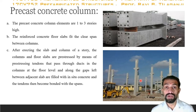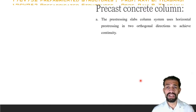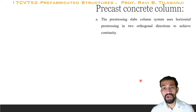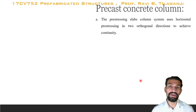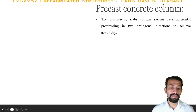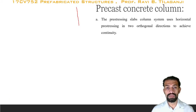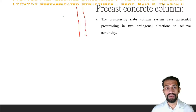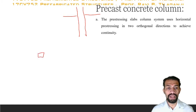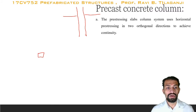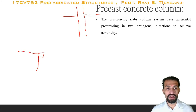A further aspect of the precast column system is pre-stressing the slab-column connection using horizontal pre-stressing in two orthogonal directions to achieve continuity. The moment action acts in both directions. For example, if a column is here, the slab extends from both sides; in plan, the column sits at an edge where a slab is present on one or both sides.